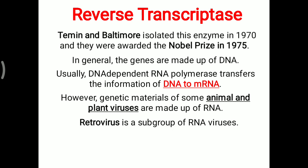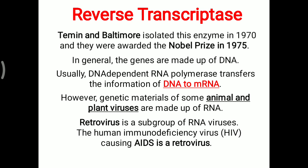Retrovirus is a subgroup of RNA viruses. The human immunodeficiency virus, HIV, which causes acquired immunodeficiency syndrome — AIDS — is one type of retrovirus. Here, instead of DNA, RNA acts as a template. So with the help of this RNA, various genetic information can be passed on. But for RNA to act as a template, reverse transcriptase enzyme is needed.